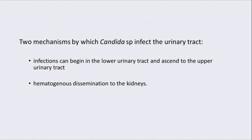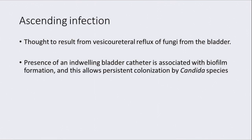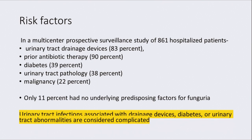There are two mechanisms by which Candida species can infect the urinary tract. Firstly, the infection can begin in the lower tract and ascend to the upper urinary tract. Secondly, there can be hematogenous dissemination to the kidneys. Ascending infection is thought to result from vesico-ureteric reflux of fungi from the urinary bladder. The presence of an indwelling bladder catheter is associated with formation of a biofilm, which allows persistent colonization by Candida species. In the surveillance study, the most common risk factor associated with fungal UTI was prior antibiotic therapy, found in 90% of patients.